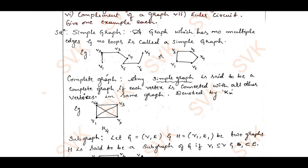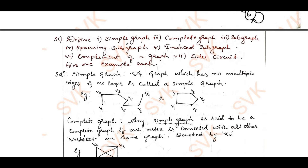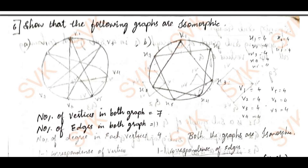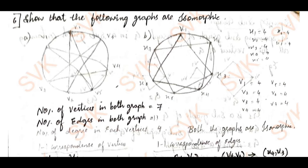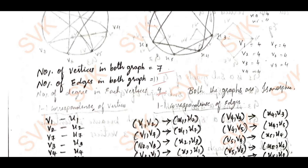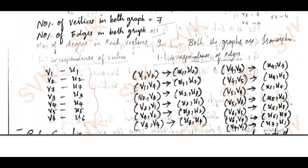This is what I discussed in my previous video — you can refer to the definitions of simple graph, complete graph, subgraph, and spanning subgraph. Then, to show the given graphs are isomorphic: the number of vertices is 7, the number of edges is 13, and the degree of each vertex is 4. I have shown the one-to-one correspondence between edges and vertices, so both G1 and G2 are isomorphic to each other.